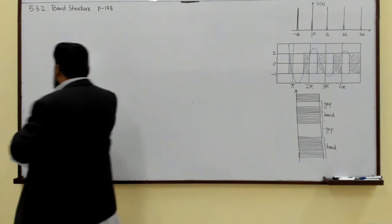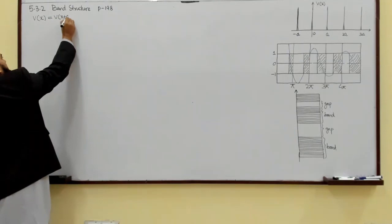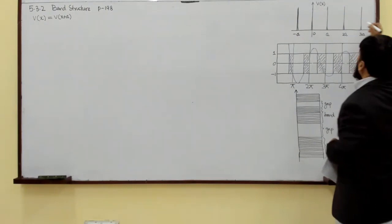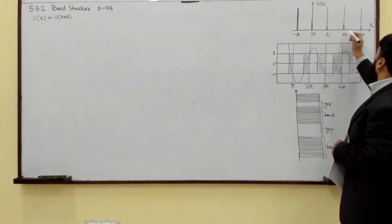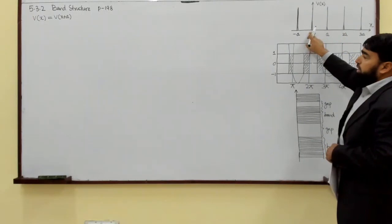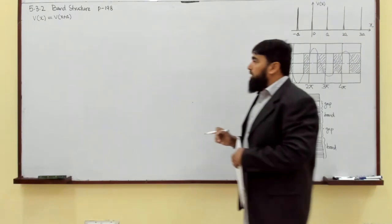Now we are dealing with a periodic potential. The definition of periodic potential is that V(x) = V(x + a), meaning the potential at position x is the same as at x plus a, x plus 2a, x plus 3a, and so on along the lattice.